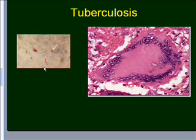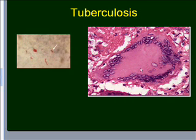On the right-hand side is a picture showing classical Langhans giant cells. A giant cell is one singular, large cell that contains numerous nuclei. All those blue structures you see are nuclei, arranged in a typical horseshoe pattern that we can typically see in tuberculosis.